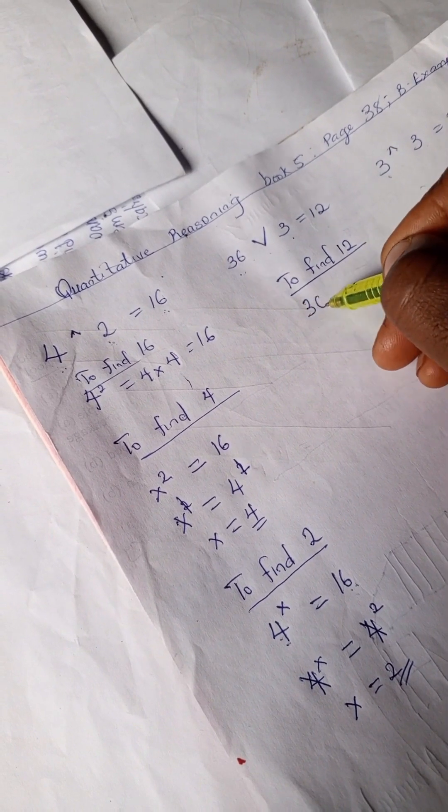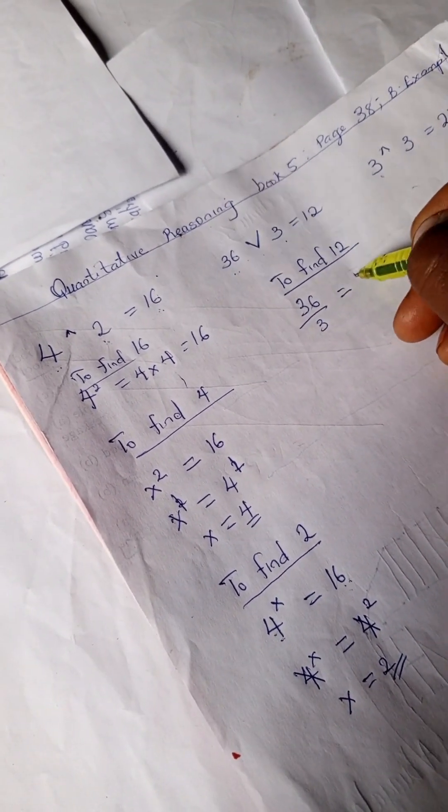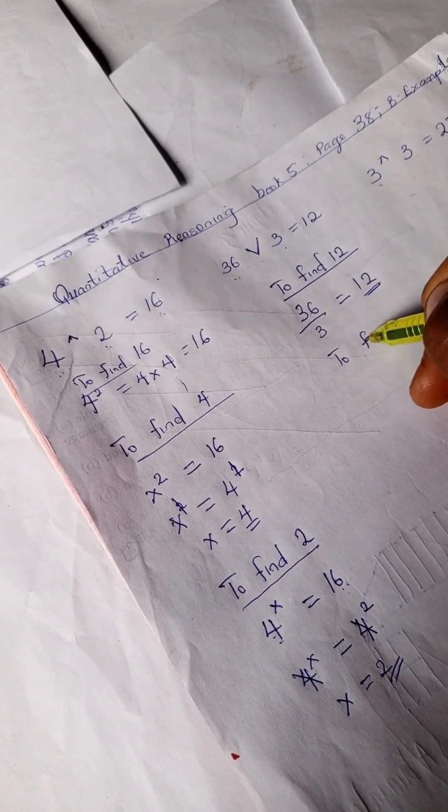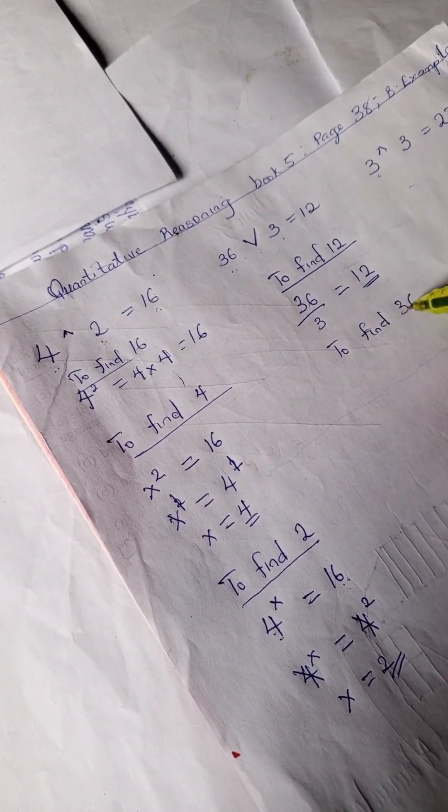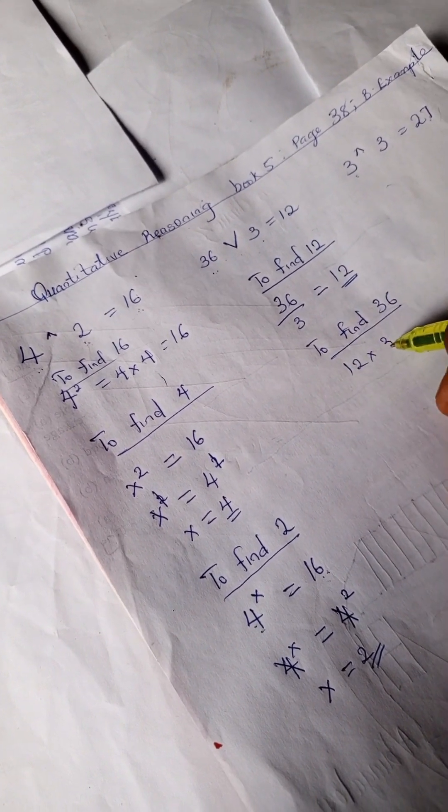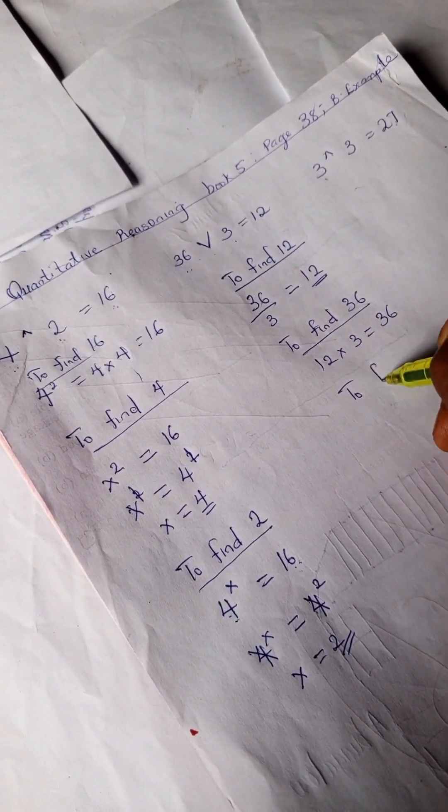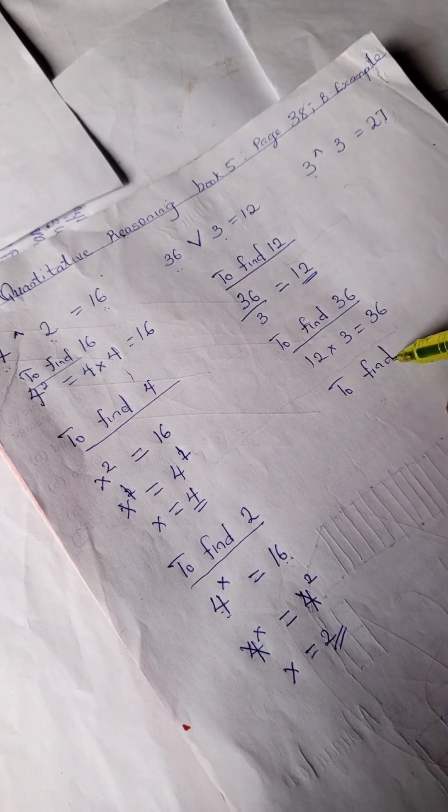For this we have to get 12. We have 36 divided by 3 is 12. To find 36, we have 12 times 3 is 36. And to find 3, we have 36 divided by 12 equals 3.